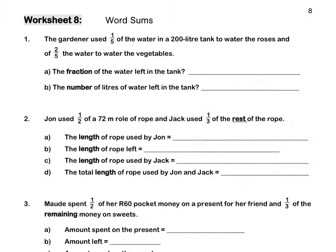Worksheet 8. The gardener used 1 fifth of the water in a 200-litre tank to water the roses and 2 fifths of the water to water the vegetables. What fraction of the water is left in the tank? 1 fifth plus 2 fifths is 3 fifths of the water used, therefore the fraction of water left will be 2 fifths.